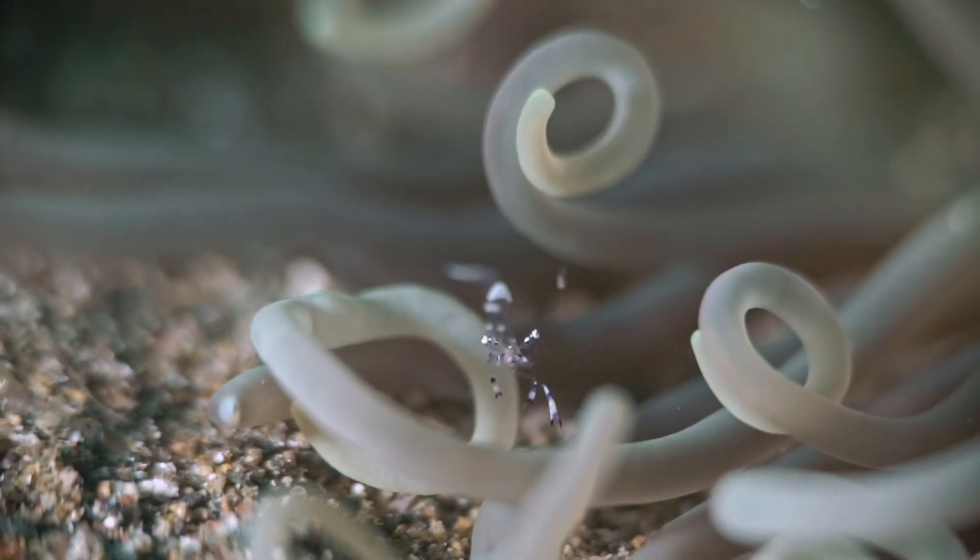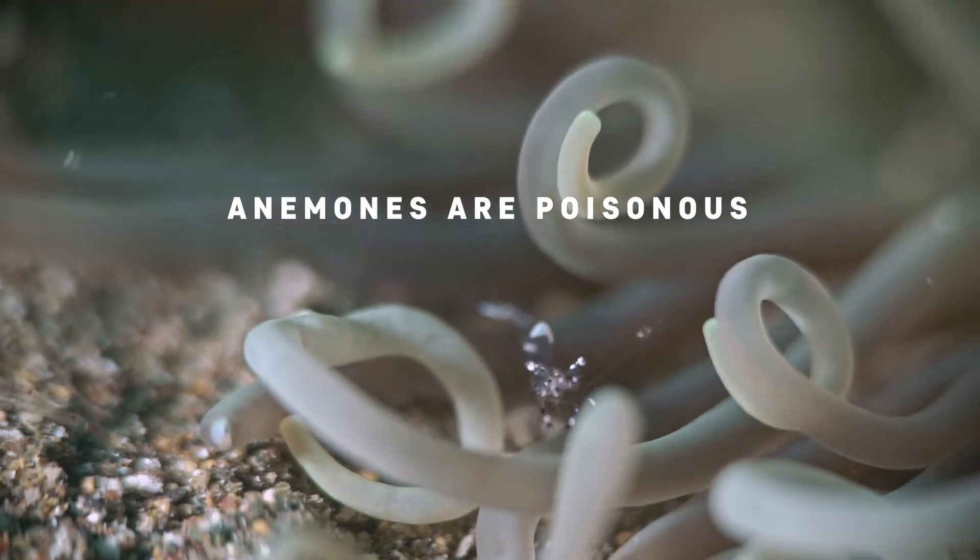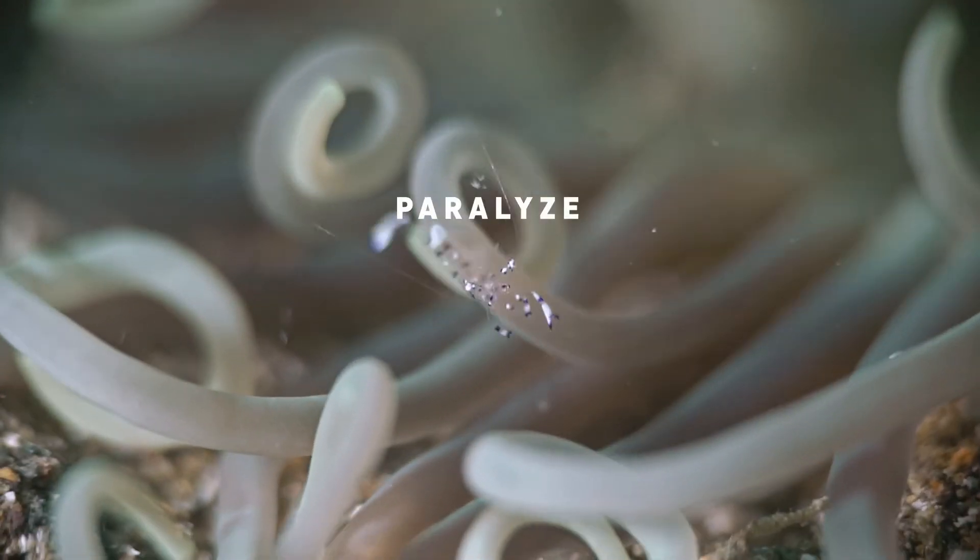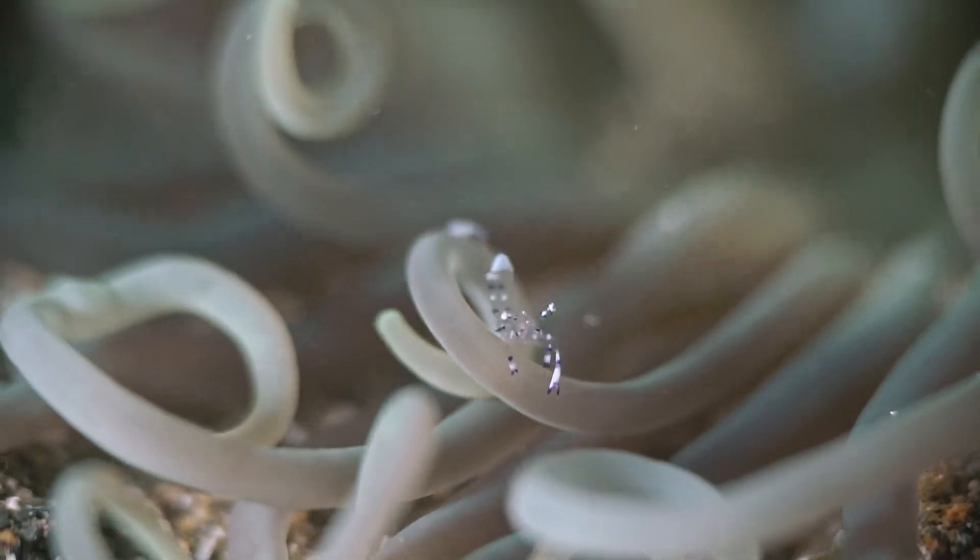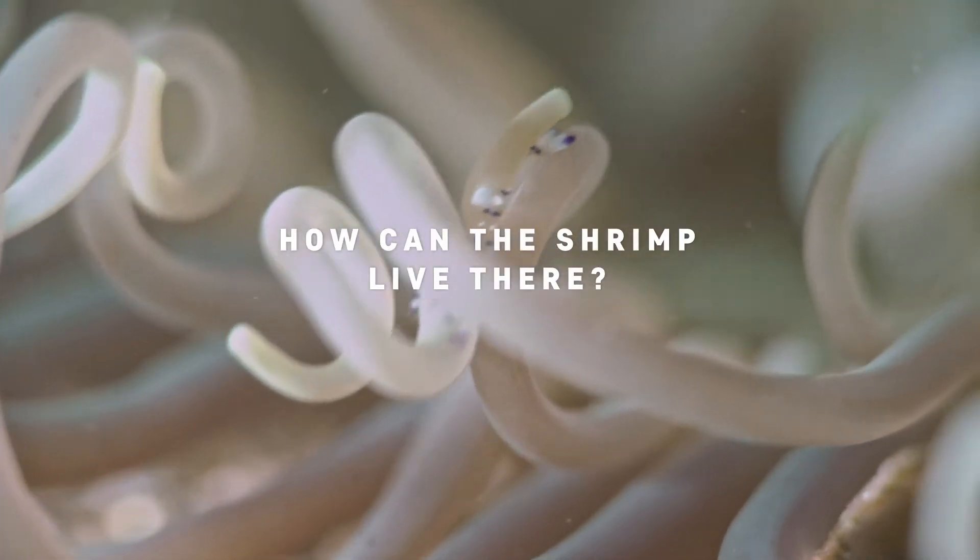If you remember from our video yesterday, anemones are poisonous. They use their poison to paralyze their prey and eat it in the process. Then how can a commensal shrimp live in it?